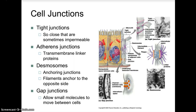Tight junctions are so close that they are sometimes impermeable. These impermeable barriers are formed because the adjacent plasma membranes' proteins actually join, producing a zipper-like fastening. We see this in the stomach, where digestive secretions are contained, and in the kidneys, to hold the contents of those organs without them infiltrating through the membranes.